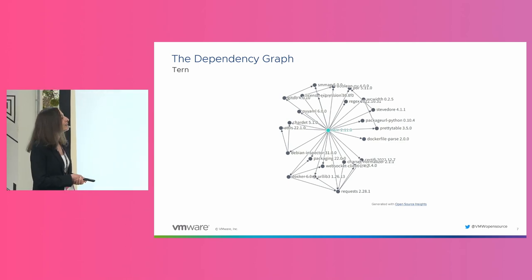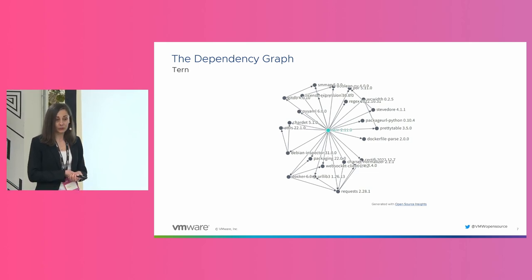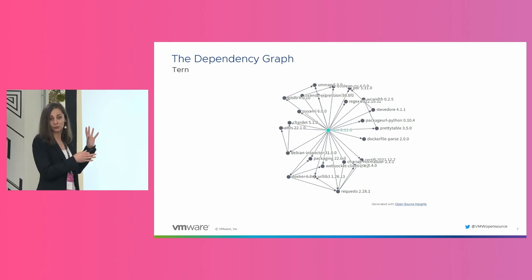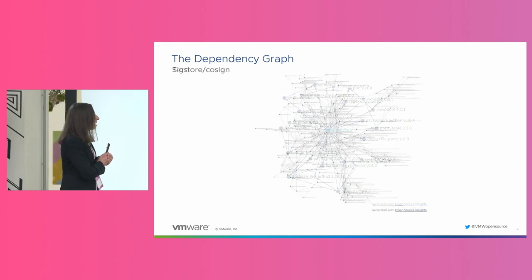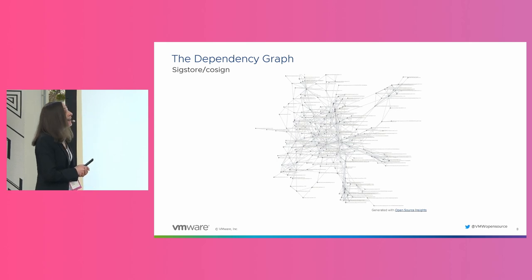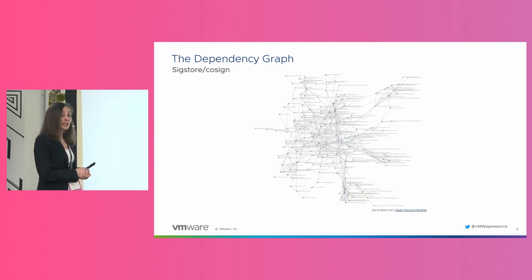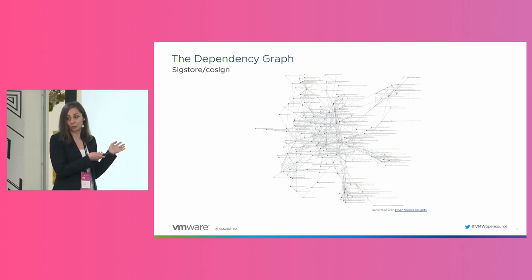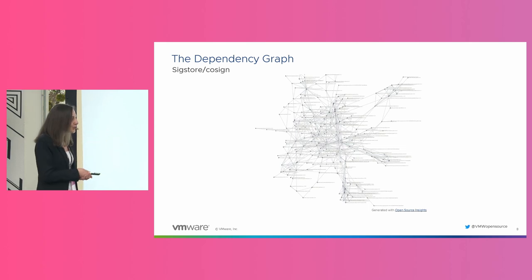This is a dependency graph of a real-life open source project — an inspection tool used for scanning container images and looking for compliance metadata in software packages installed in the image. It's not so bad, not so many dependencies. But the next level shows another dependency graph for supply chain security and signing container images. This one has a lot of dependencies — I cannot track what depends on what. It's even intimidating. This is how the dependency graphs of modern apps look like. The more dependencies, the more risks come with them.